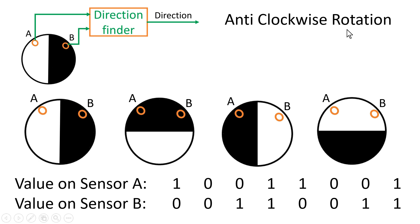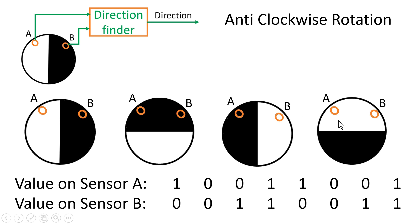Similarly, let us see the output of both sensors A and B when the disk is rotating in an anticlockwise direction. At the original position, the output of sensor A is high and output of sensor B is 0. As the disk rotates anticlockwise, both sensors come in touch with the black portion, so both give output 0. In the third position, sensor A gives logic 0 and sensor B gives logic high. In the fourth position, both sensors give logic 1.